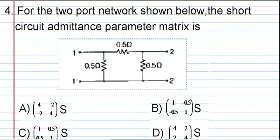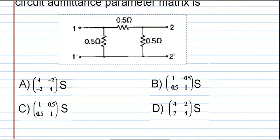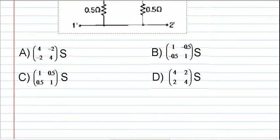The options are: A) 4, -2, -2, 4 Siemens; B) 1, -0.5, -0.5, 1 Siemens; C) 1, 0.5, 0.5, 1 Siemens; D) 4, -2, 2, 4 Siemens. Now we will see the solution.